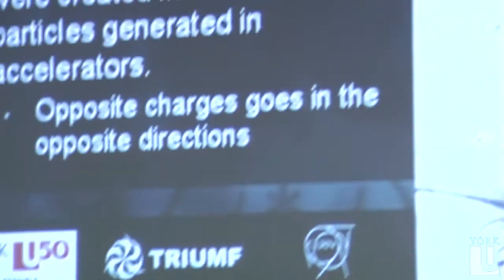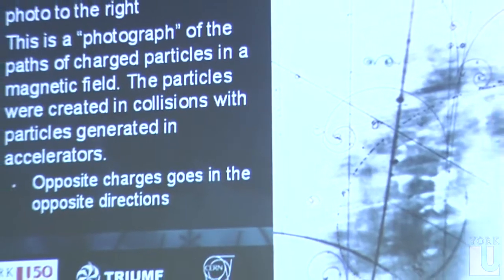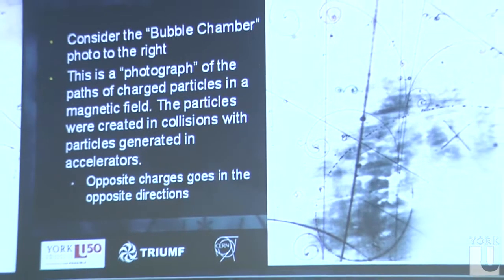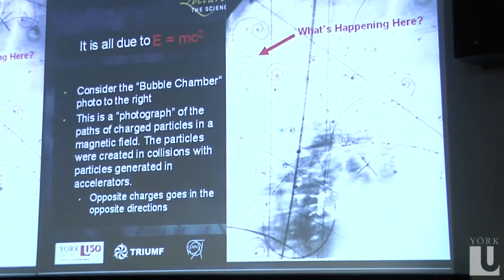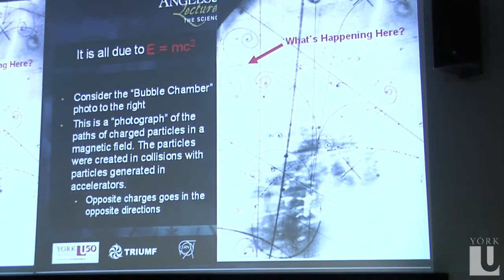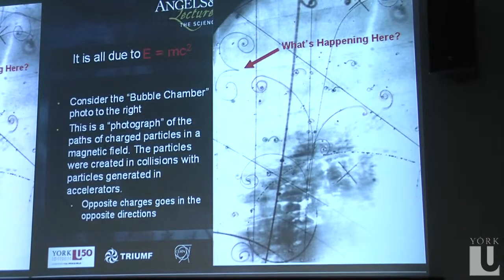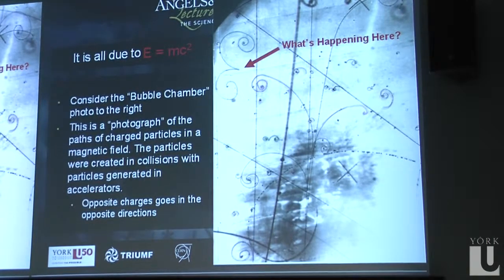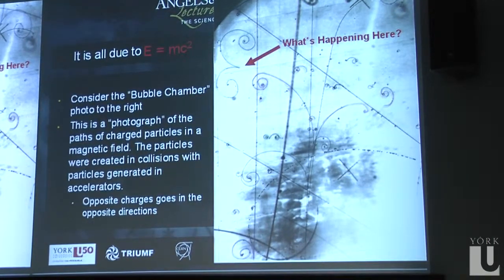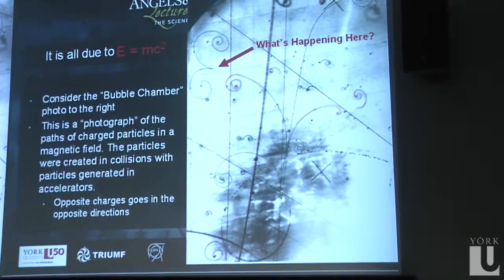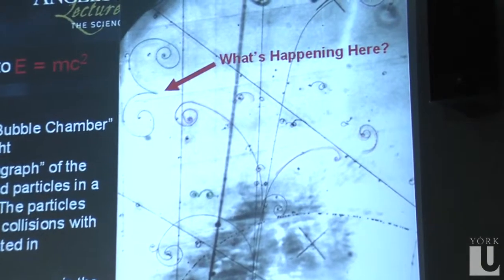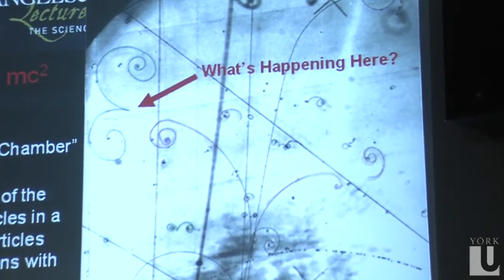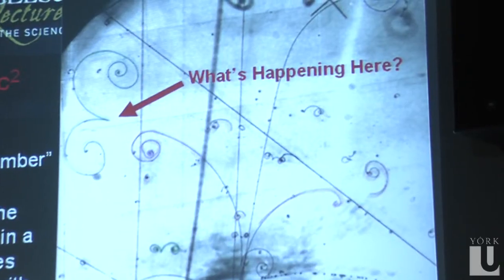On the right you can see something we call a bubble chamber photo. It's a detector in which a charged particle goes through and leaves a little trail of bubbles that you can photograph. So you literally have a photograph of the trail of a particle. You can see that some particles go this way and some go that way. This whole thing is in a magnetic field — if you're a positively charged particle, you go that way, and if you're a negatively charged particle, you go that way. So we can tell which particles are negatively or positively charged.